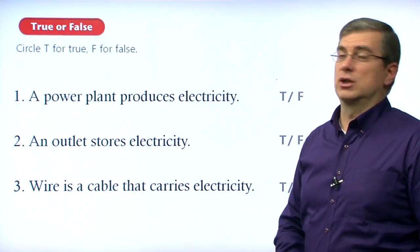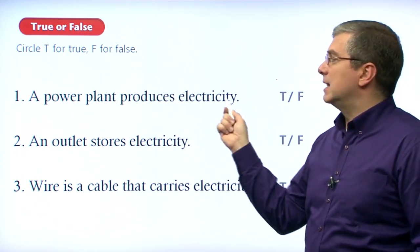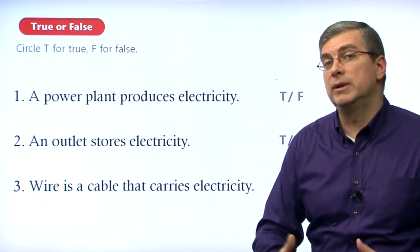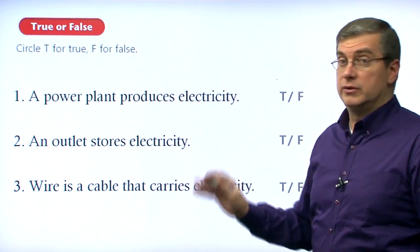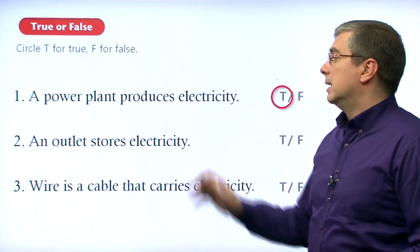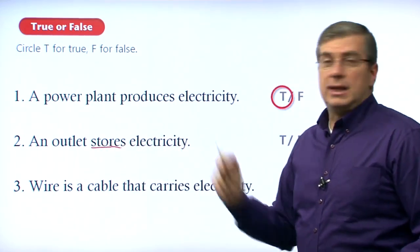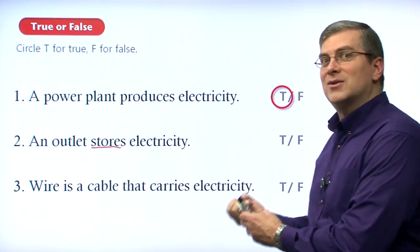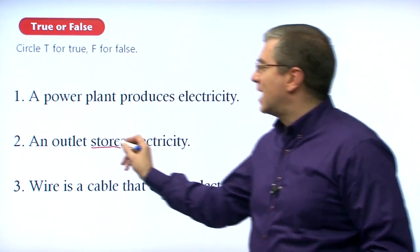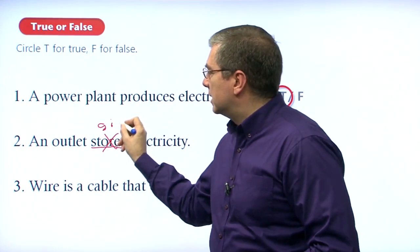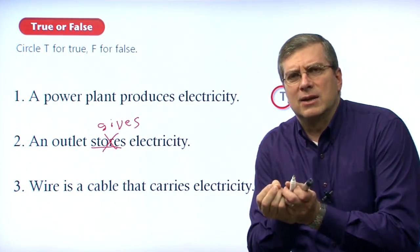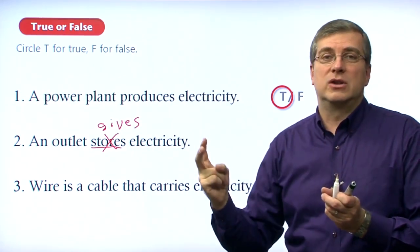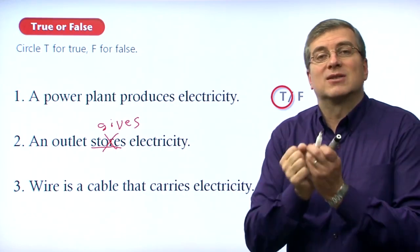Now we come to our true-false questions. Number one: a power plant produces electricity. We remember a power plant is a building that produces or makes electricity. That is true. Number two: an outlet stores electricity. An outlet does not store electricity — an outlet gives electricity but doesn't store it. It's just a connection to the wires that go to the power plant. If you cut the wires to your house, there's no electricity in your outlet. No electricity has been stored there. That's incorrect.